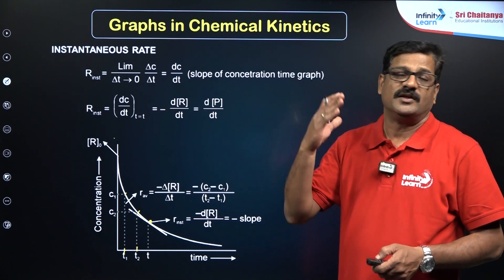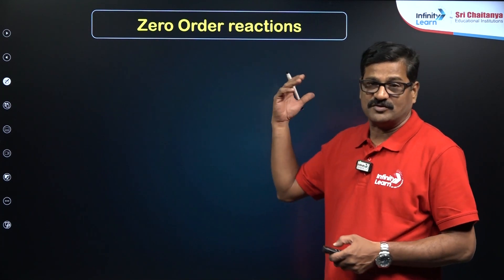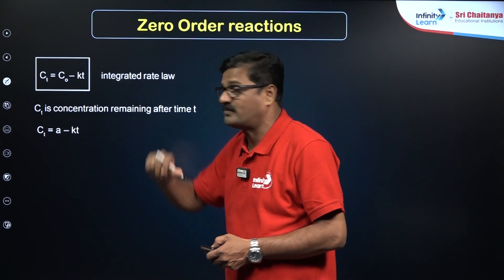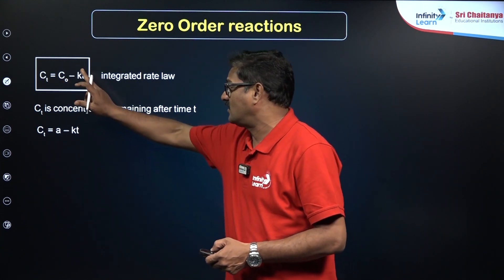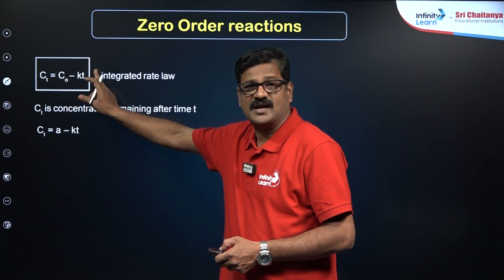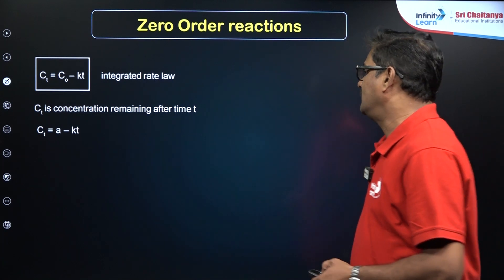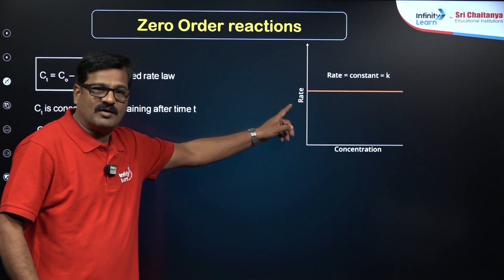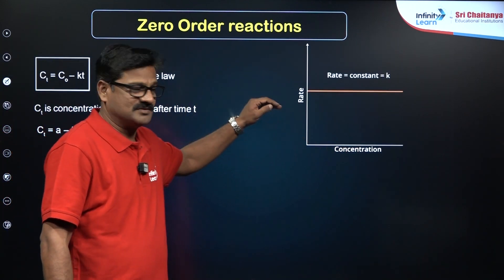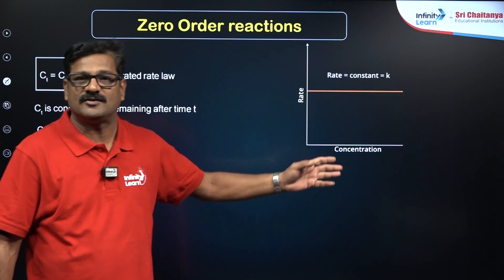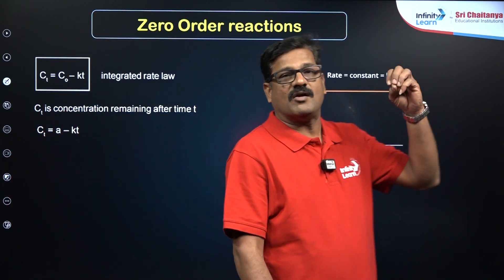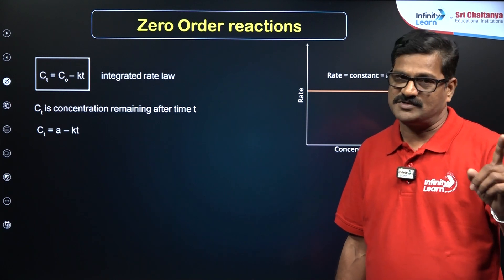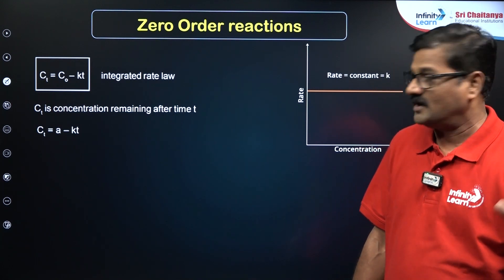Now let us go into the integrated rate expressions. Zero order and first order are very important for the NEET examination. For a zero order reaction, the integrated expression is: cₜ = c₀ − kt, where cₜ is concentration at time t, c₀ is initial concentration, and k is the rate constant. The graph shows that the rate of a zero order reaction is independent of concentration — it is a straight line parallel to the concentration axis. For zero order reactions, the rate dimension equals the rate constant dimension.